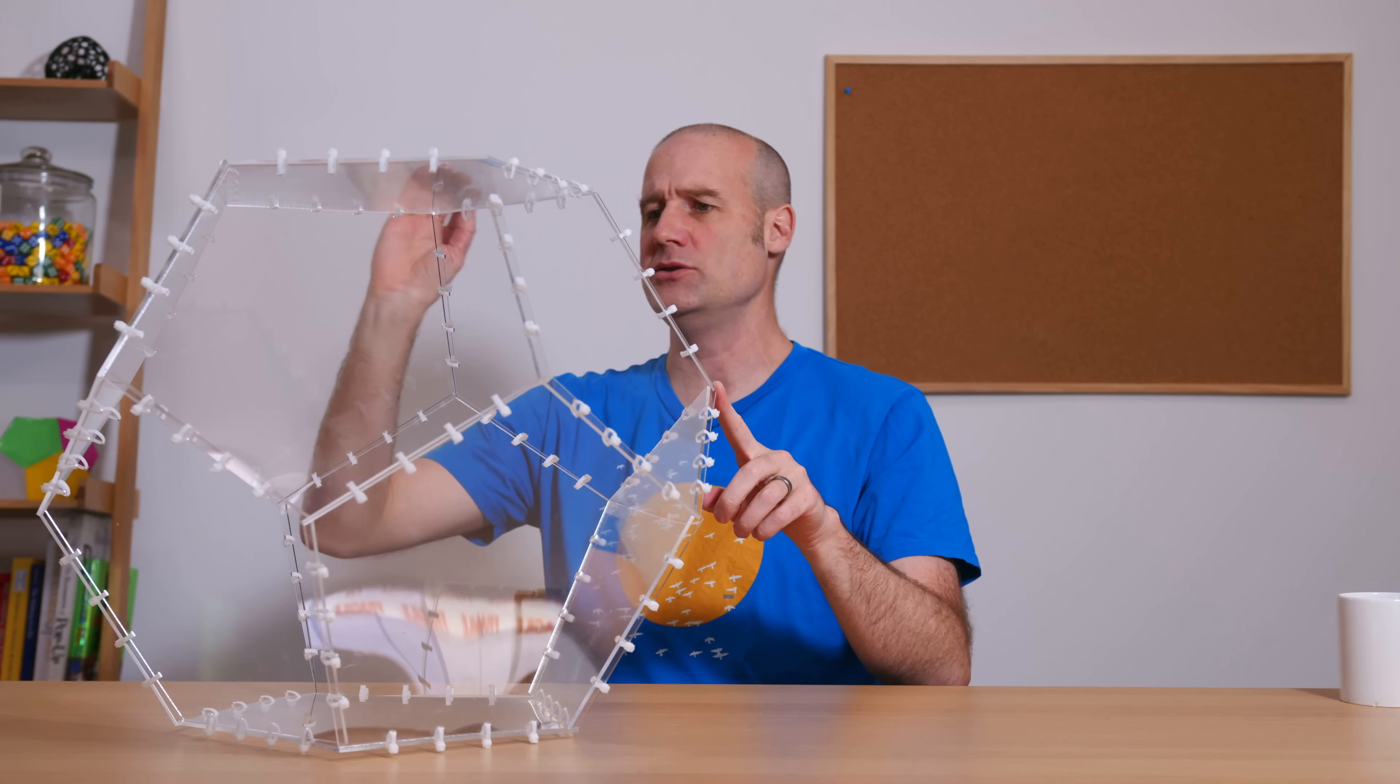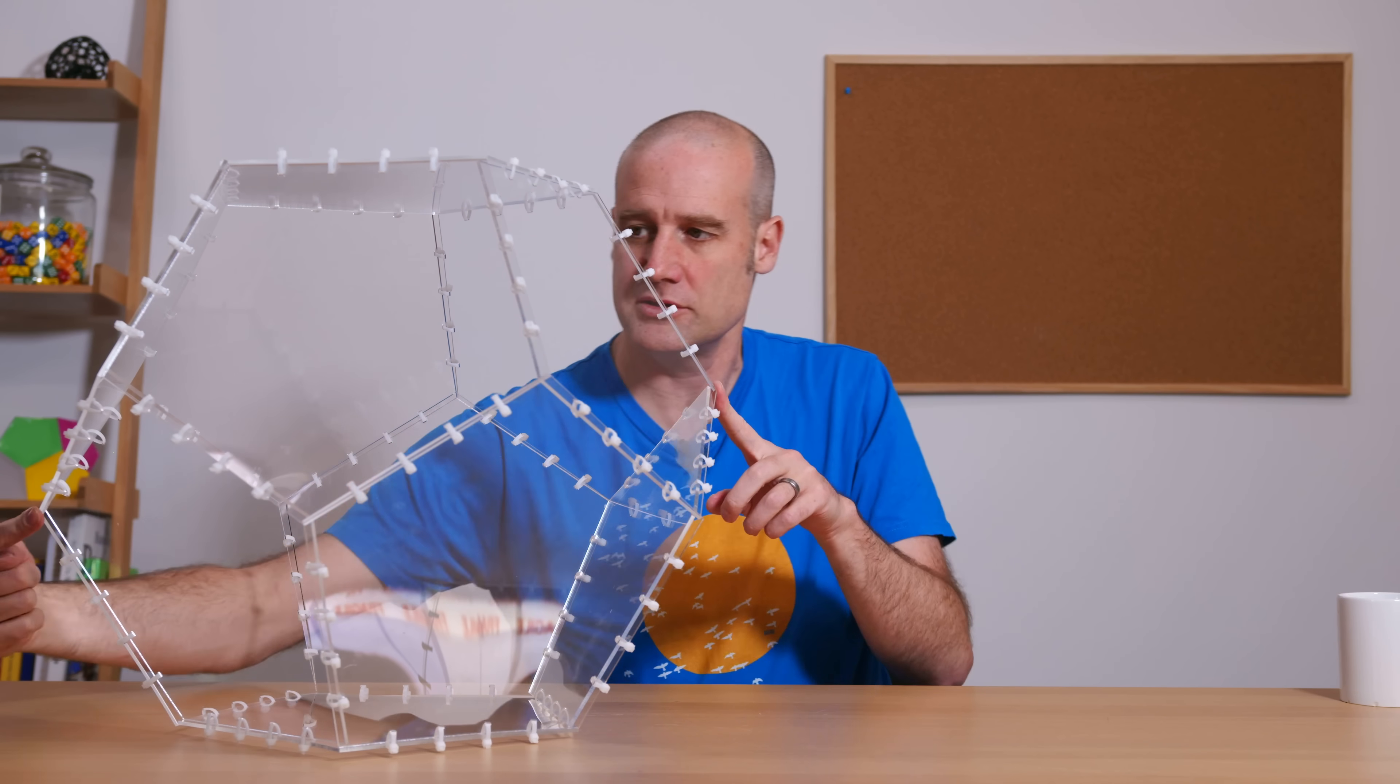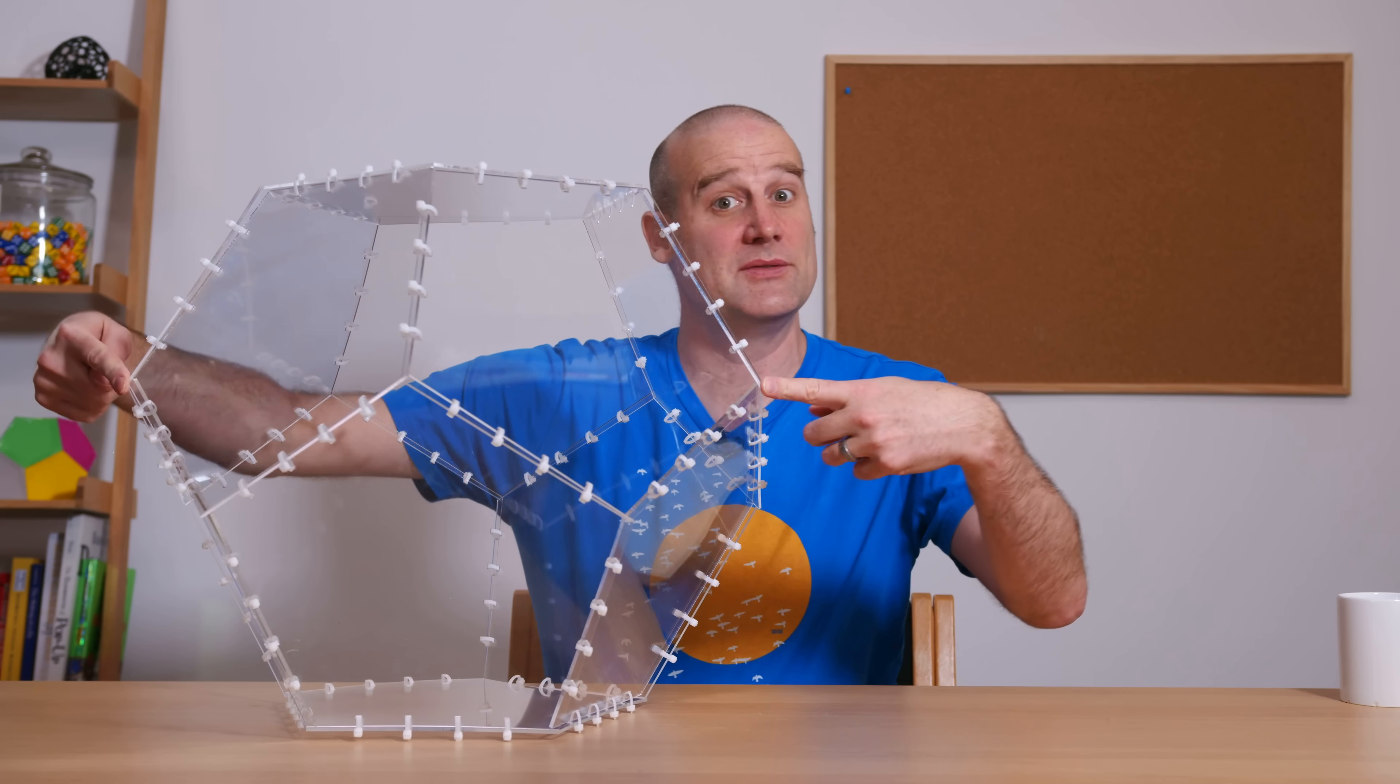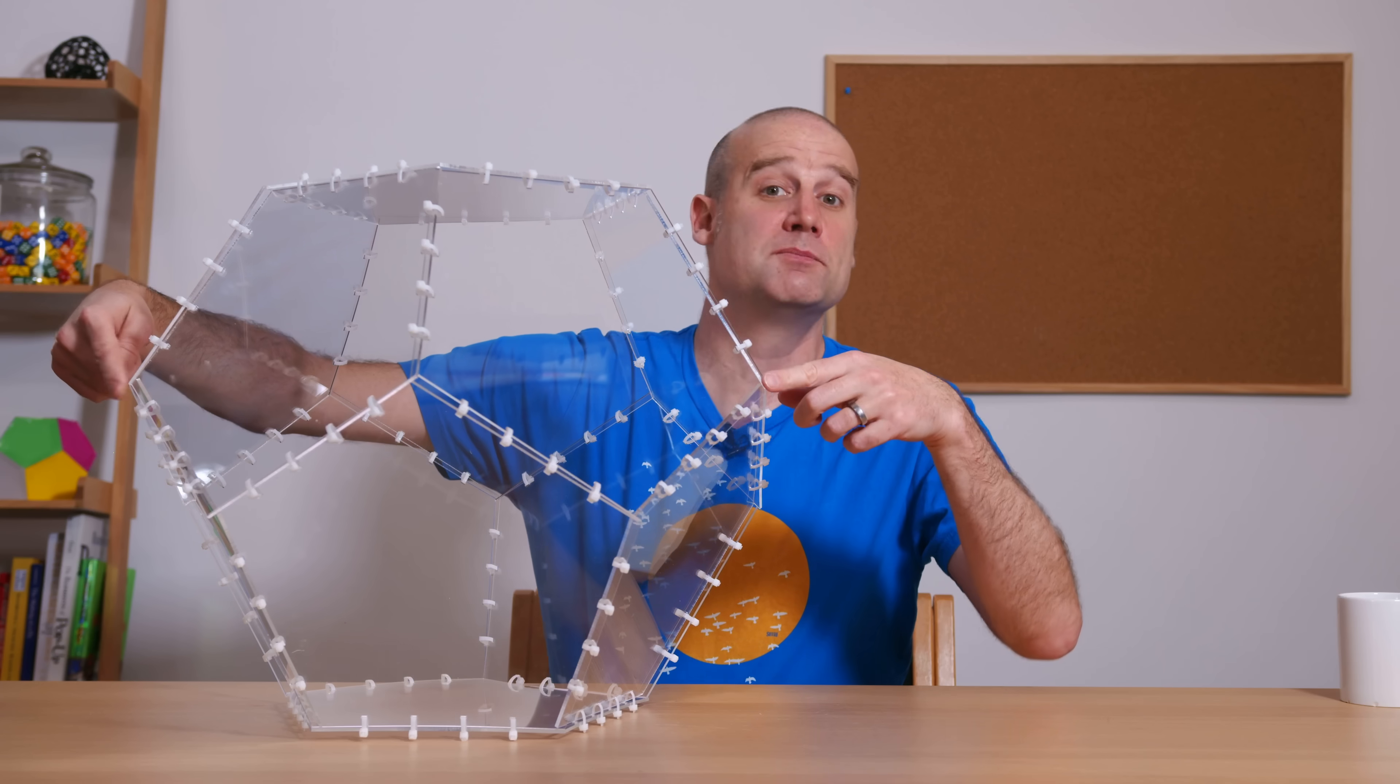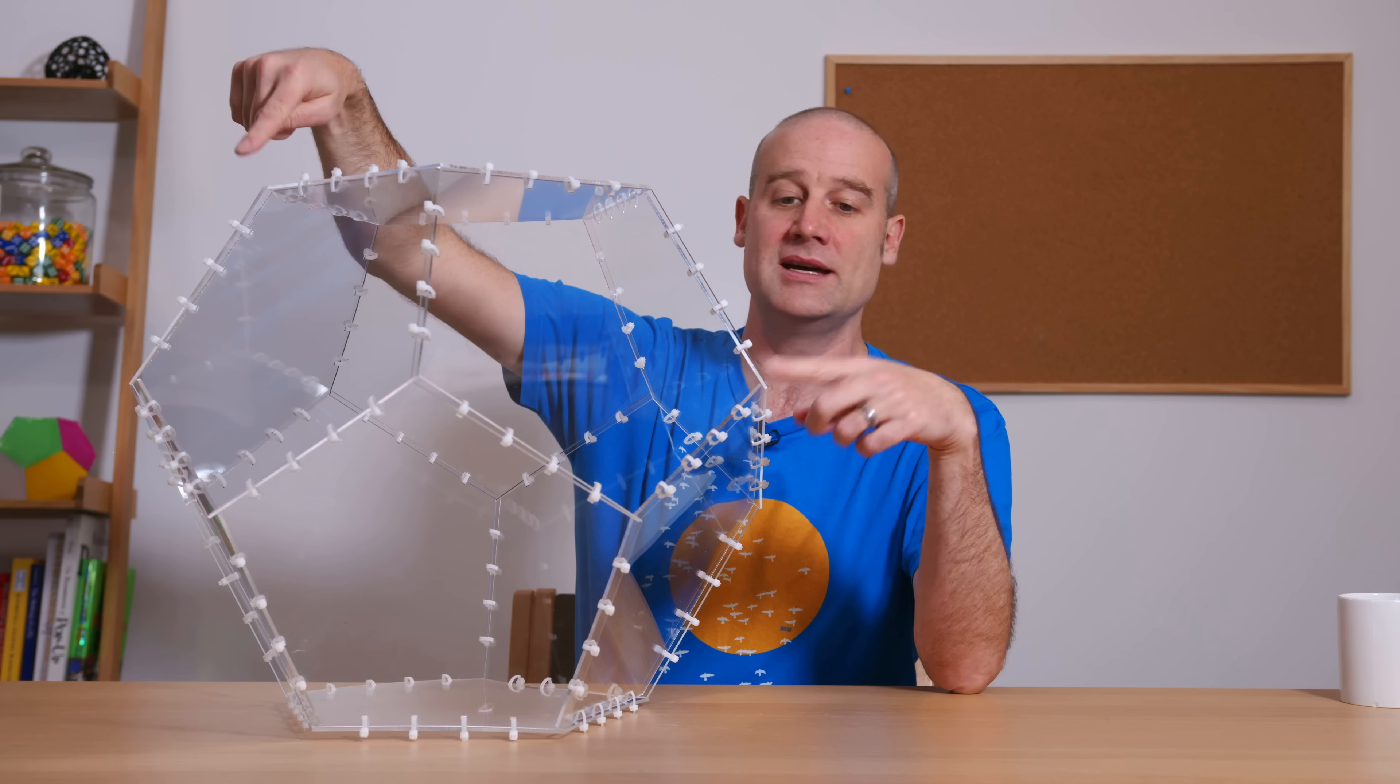There are 10 of these that go right across the center. There are then the medium-size space diagonals, which are going straight across to that one over there. And then you've got the smallest internal space diagonal, which is if you go from here to here.